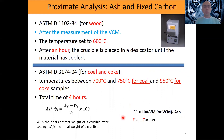To recap, within the proximate analysis of biomass we use four different properties to measure the quality and characteristics of biomass: moisture content, volatile combustible matter, ash, and fixed carbon. Hopefully this video gives you a good idea of how the proximate analysis of biomass is done.